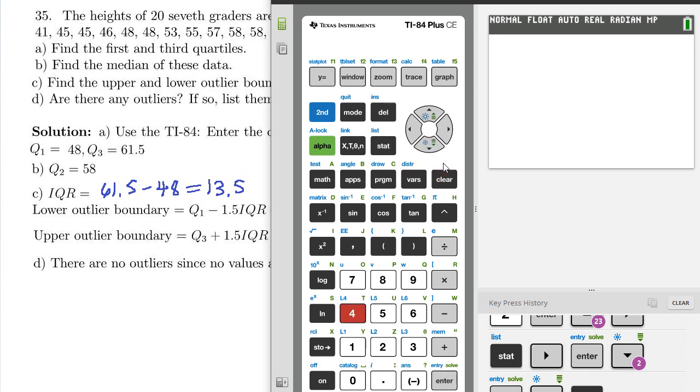And let's compute that. So 48 minus 1.5 times 13.5, 27.75.